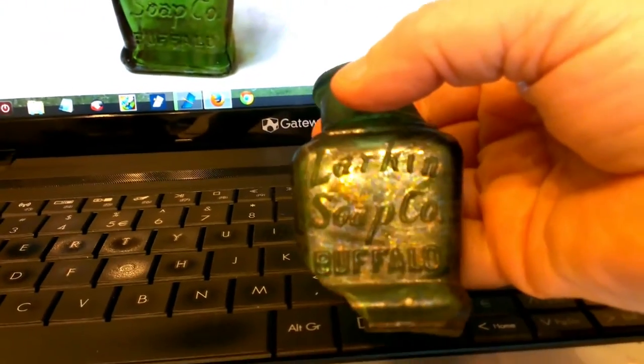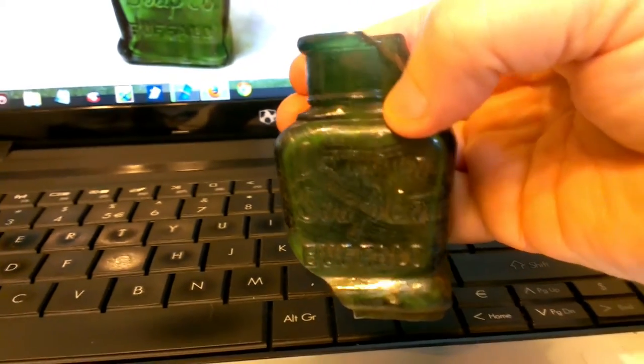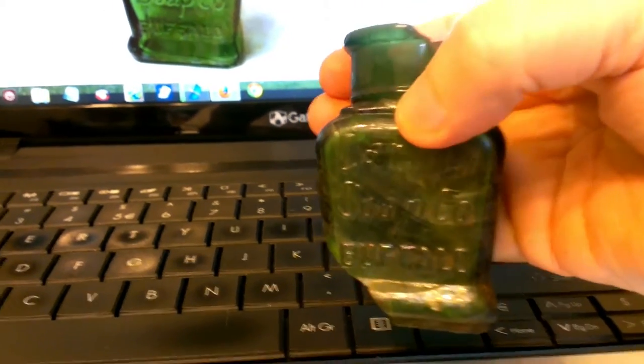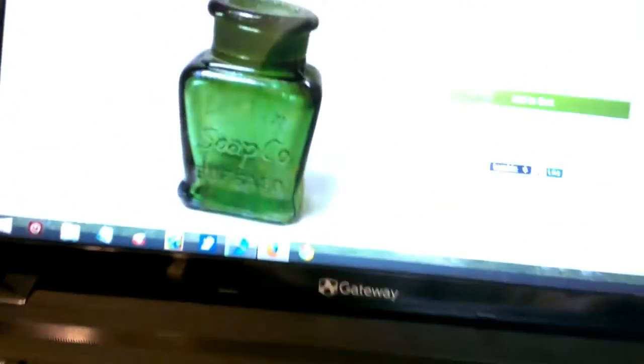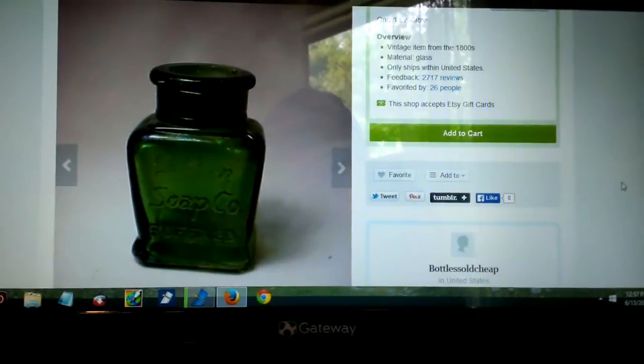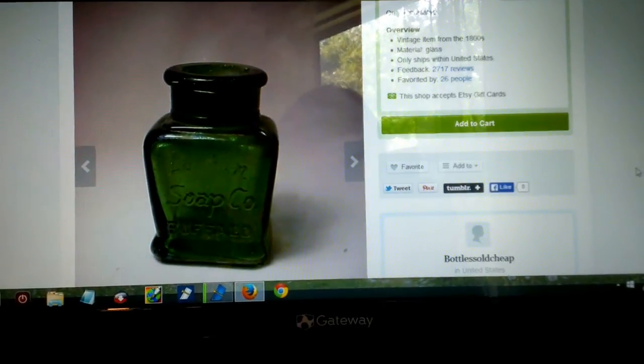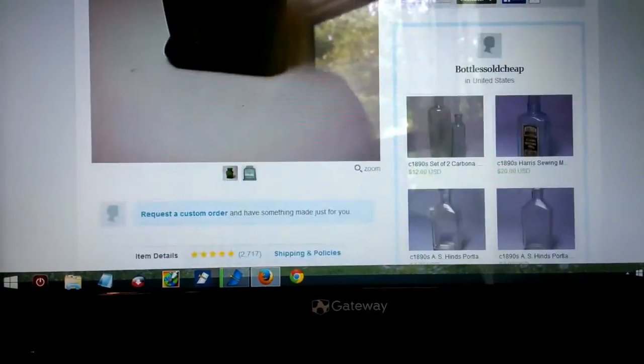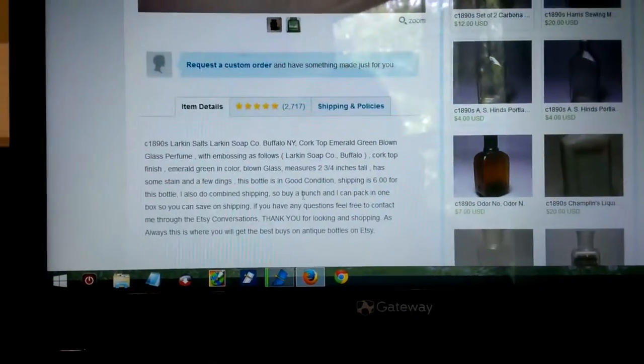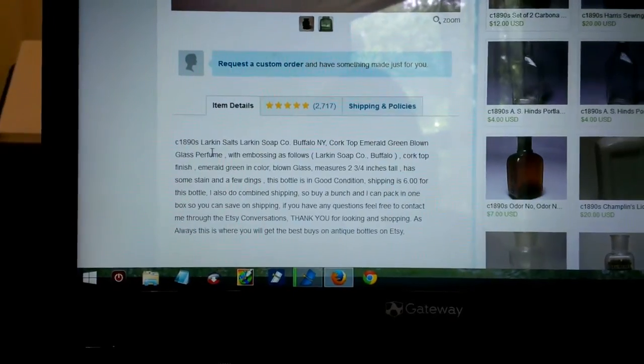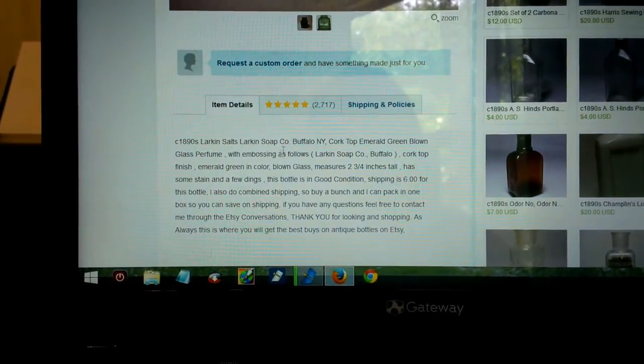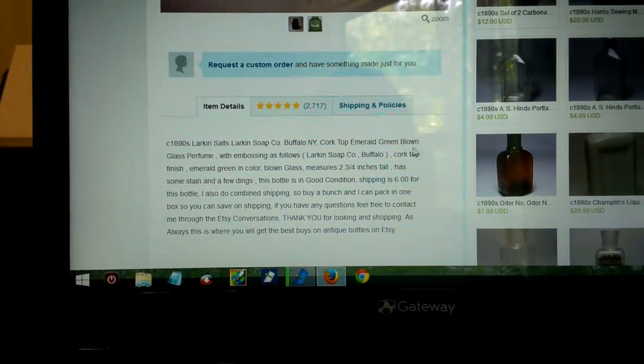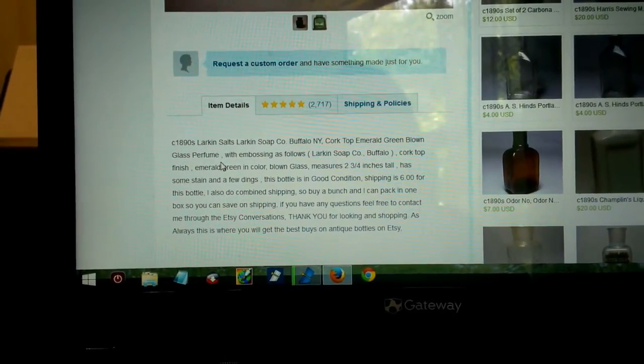Okay, this Larkin Soap Company Buffalo Bottle, the little green bottle. This is why I bring this stuff home. Here's one on Etsy. And it says it's vintage from the 1800s, but it does go on to say it's around 1890. So circa 1890, Larkin Salts, Larkin Soap Company Buffalo New York Corp Top Emerald Green Blown Glass Perfume.